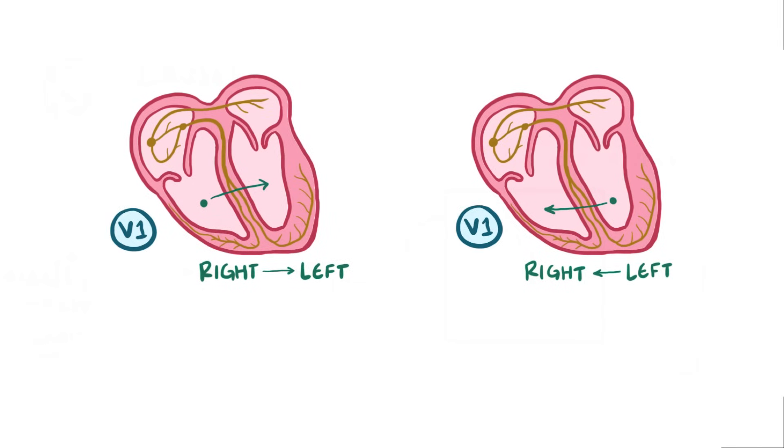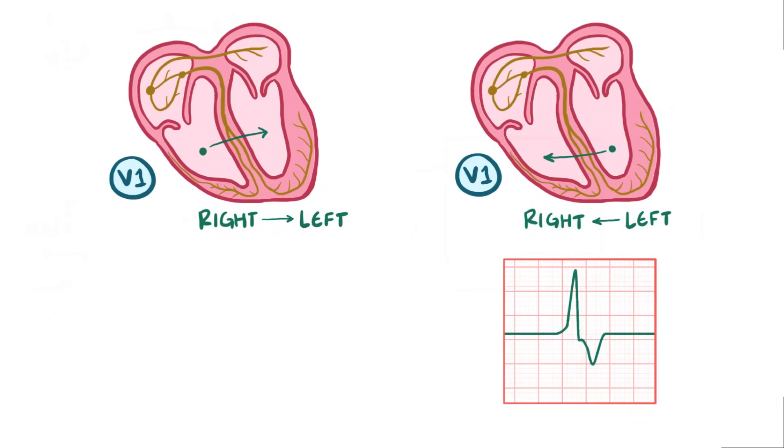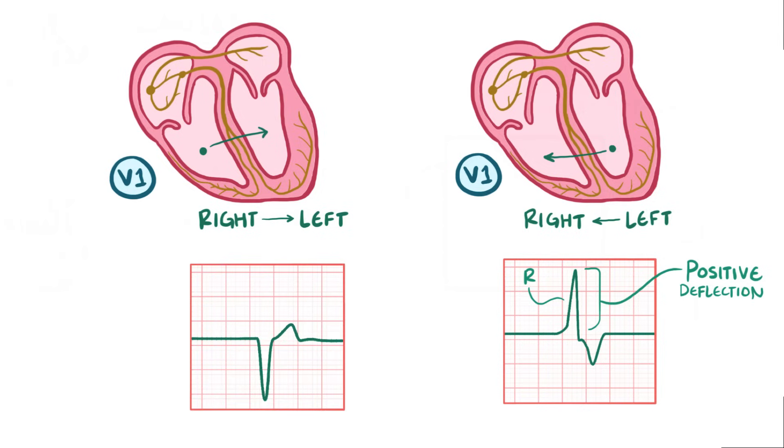Now lead V1 on an ECG measures a depolarization wave that moves toward the right ventricle. So when an ectopic focus originates in the left ventricle and moves toward the right ventricle, the V1 lead shows a large positive complex, with the dominating R wave. When an ectopic focus originates in the right ventricle and then moves toward the left ventricle, the V1 lead shows a large negative complex, with the dominating S wave.